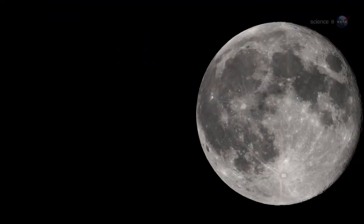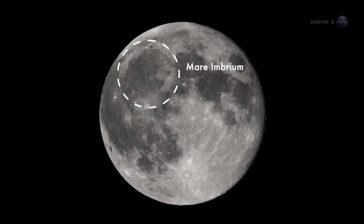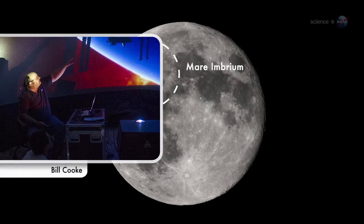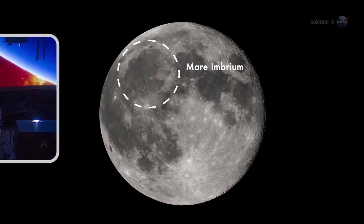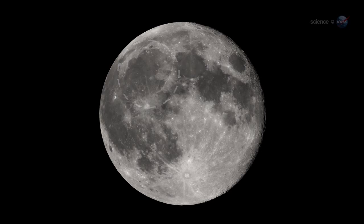On March 17, 2013, an object about the size of a small boulder hit the lunar surface in Mare Imbrium, says Bill Cook of NASA's Meteoroid Environment Office. It exploded in a flash nearly ten times as bright as anything we've ever seen before.